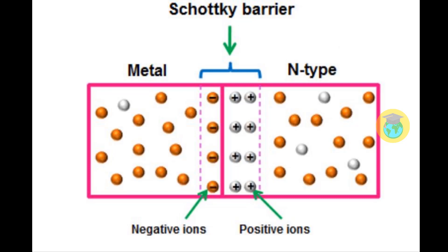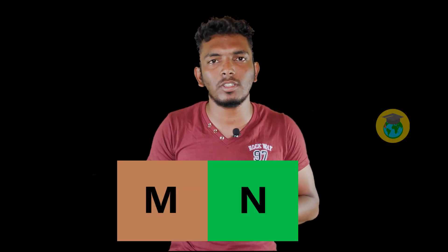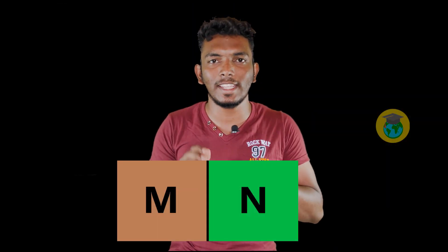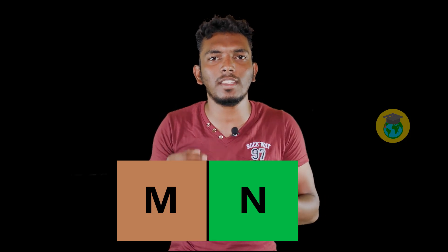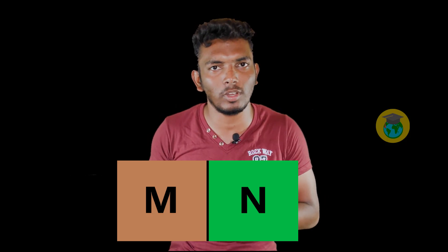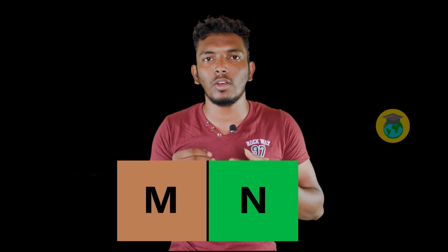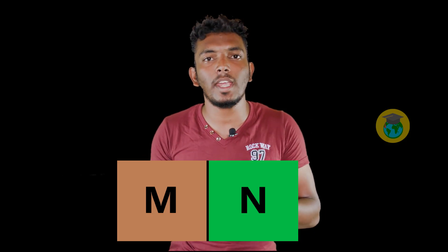Because this junction is formed between a metal and an N-type semiconductor, it is an uneven junction. This is why the barrier is very small — only about 0.2 to 0.3 volts.